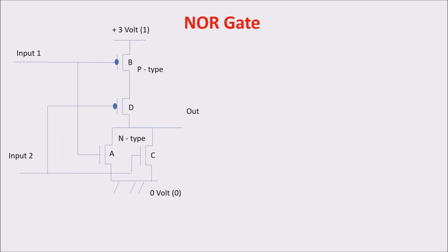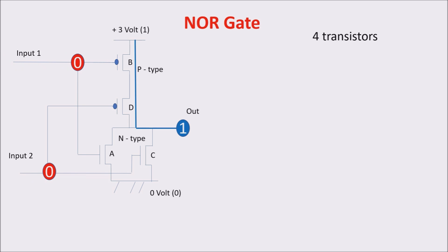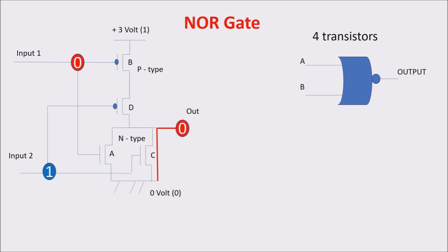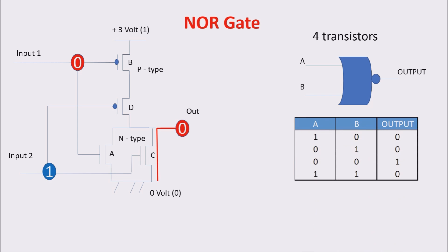Here is another useful gate: the NOR gate. As you can see, we only use four transistors. In the NOR gate, the only way to get a 1 is applying 0 to both inputs. In this case, the P-type transistors turn ON and the N-types turn OFF. If we put a 1 in at least one of the two inputs, at least one N-type transistor turns ON, thus connecting the output with our 0. In the truth table, you can see the only way to get 1 is putting both A and B inputs to 0.